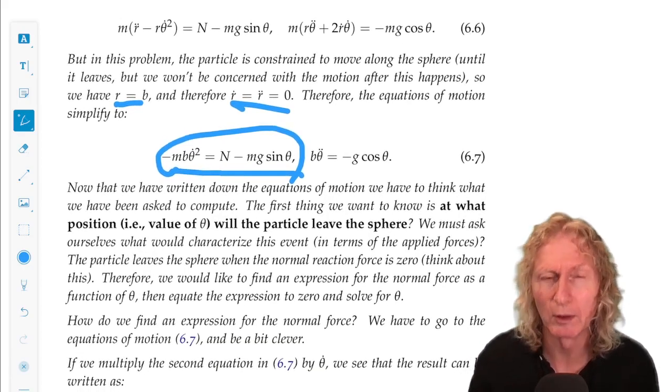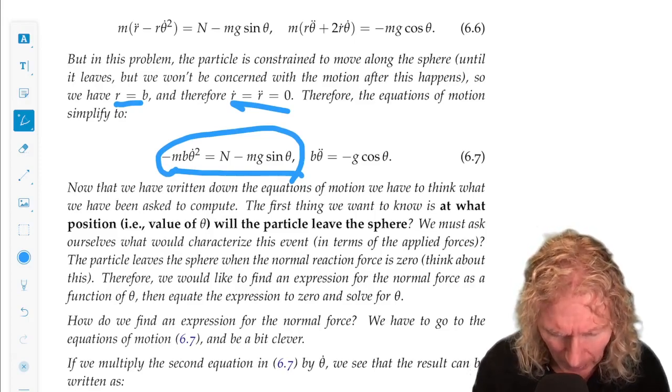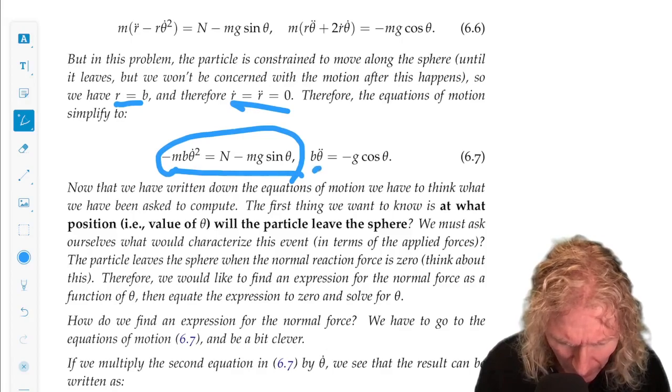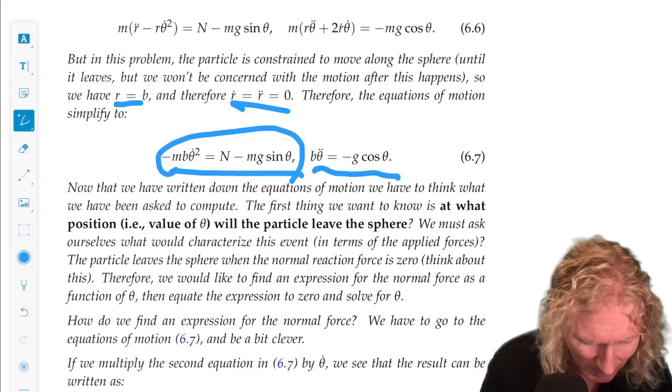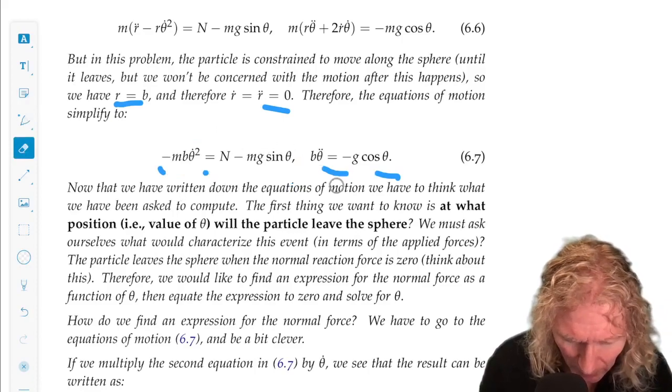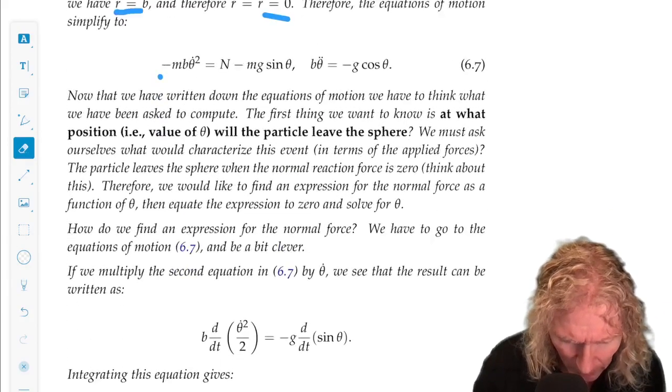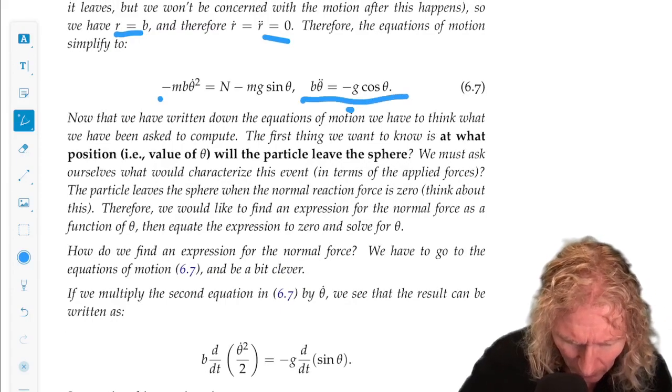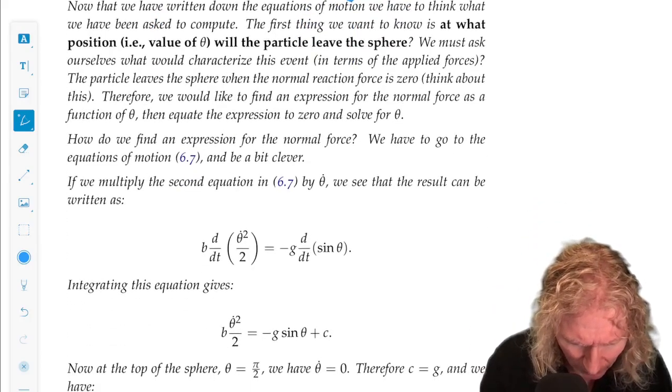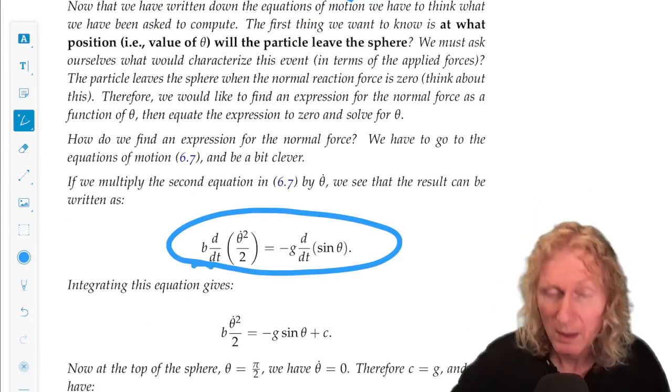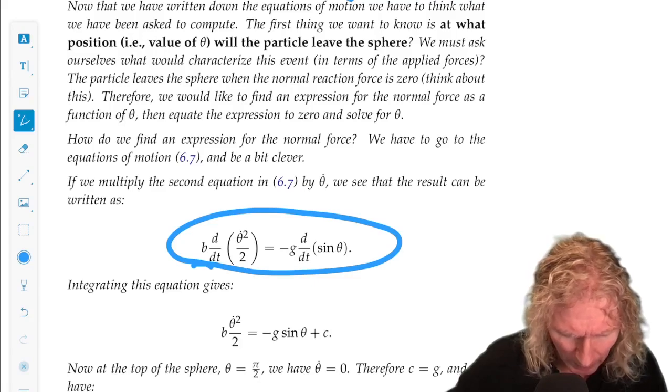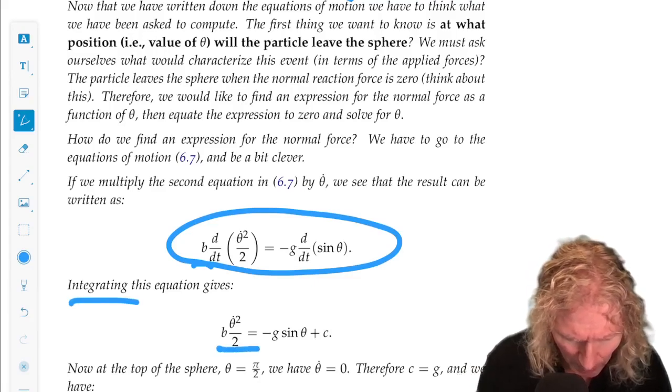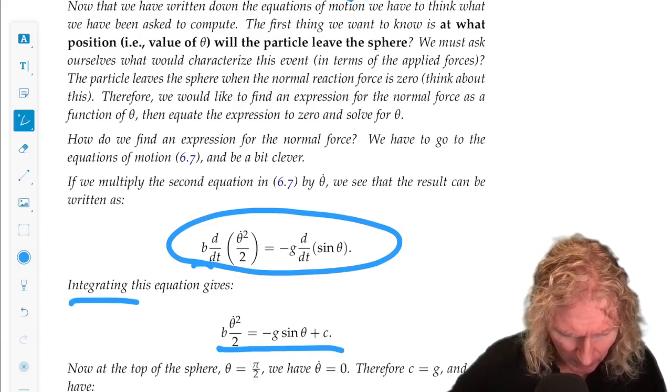Well, now we have to do something a little bit clever. We can get a value for theta dot squared from equation 6.7 to plug in from the right hand expression of 6.7 to plug in the left hand side. How can we do that? Well, if we multiply 6.7 by theta dot, we see that that's the same as this expression. In other words, we can integrate it with respect to time, we pick up a constant.